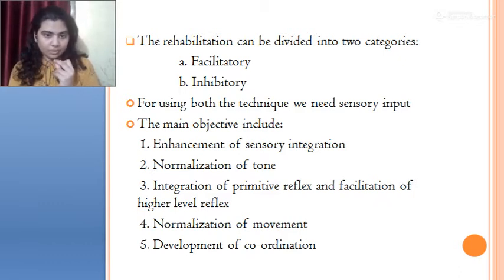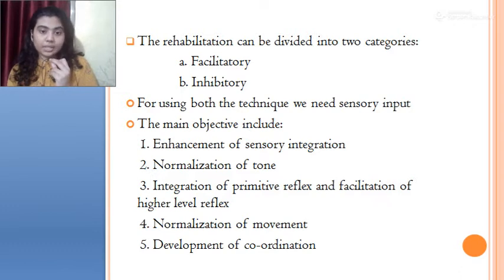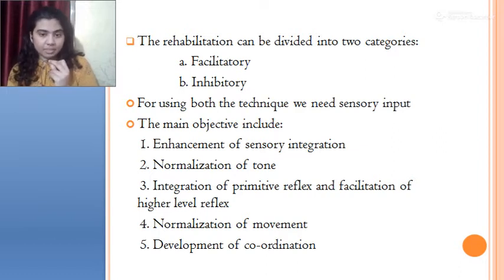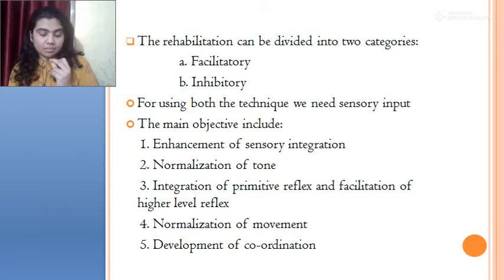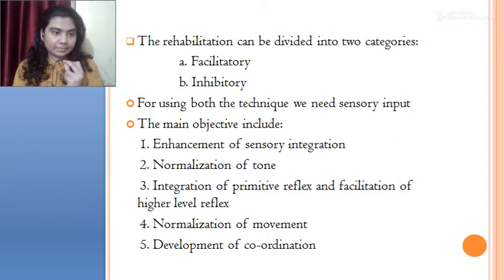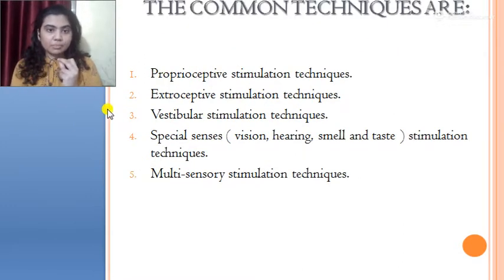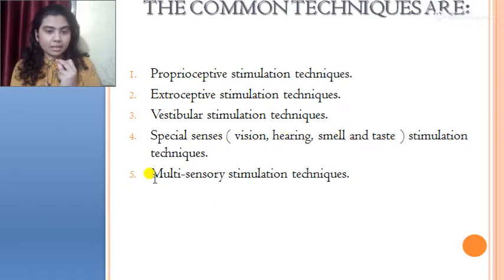Regarding normalization of tone, certain stimuli will normalize abnormal tone. For integration of primitive reflex and facilitation of higher-level reflex, we inhibit the primitive reflexes and facilitate normal movement using key points of control — this is the concept based on Bobath. The common techniques are: proprioceptive stimulation, exteroceptive stimulation, vestibular stimulation, spatial senses (vision, hearing, smell, taste), and multi-sensory stimulation techniques.